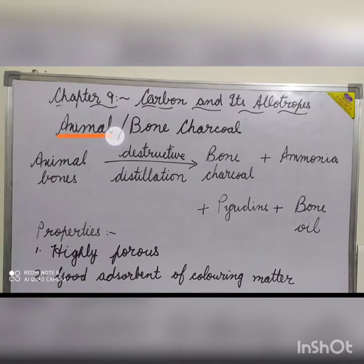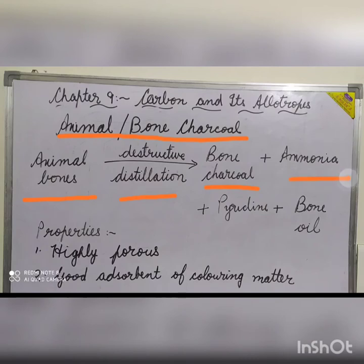Animal or bone charcoal is obtained by the destructive distillation of animal bones, using the same process as for the manufacture of wood charcoal. The destructive distillation of animal bones yields bone charcoal, ammonia, pyridine and bone oil.